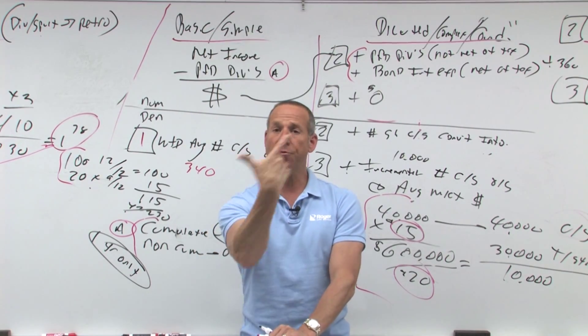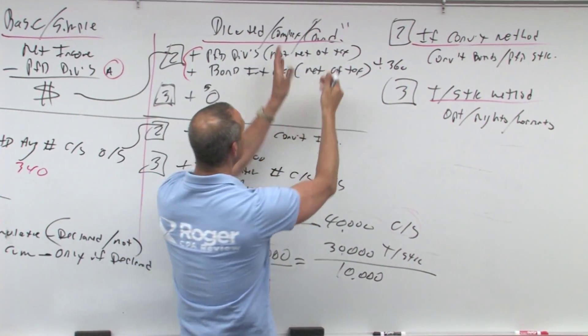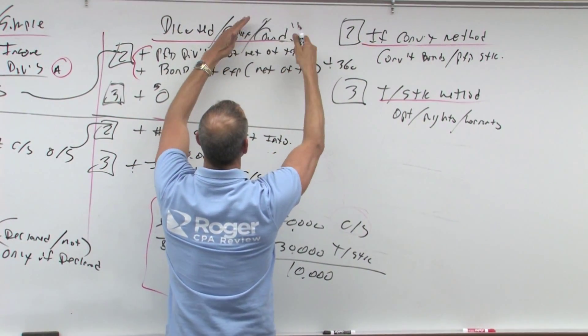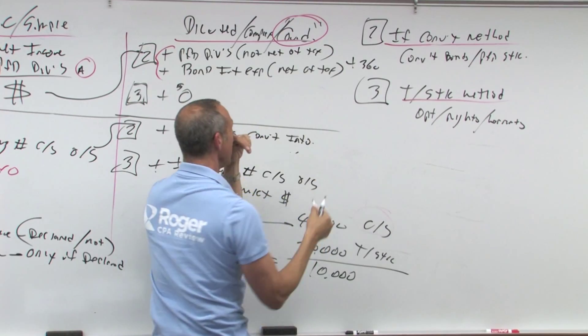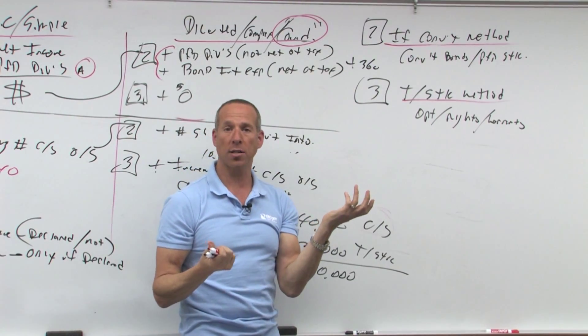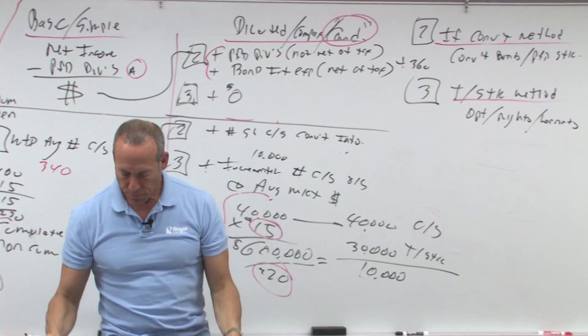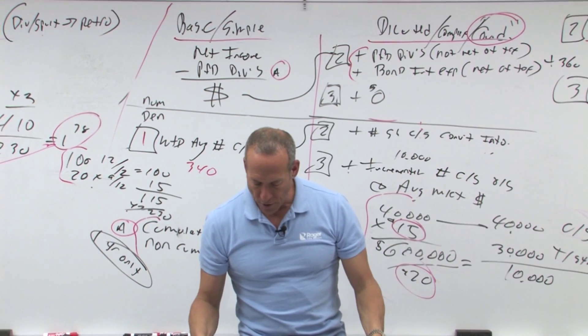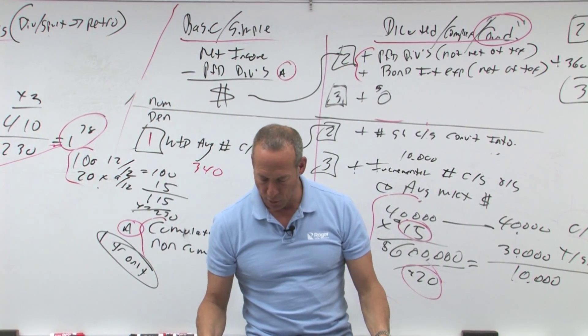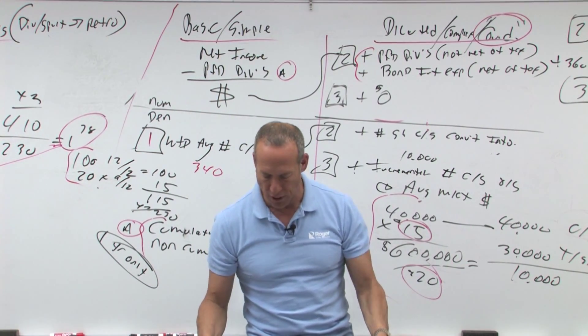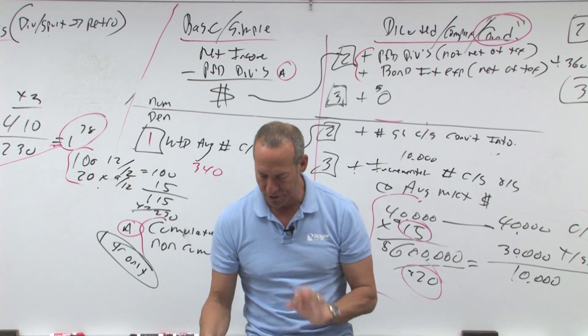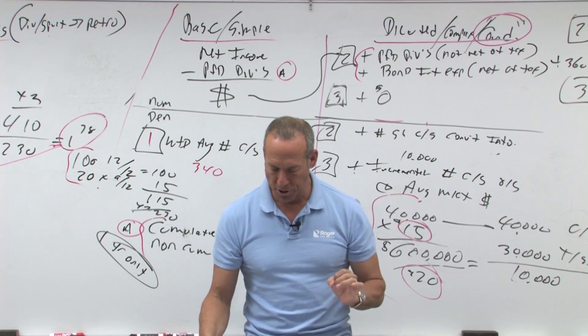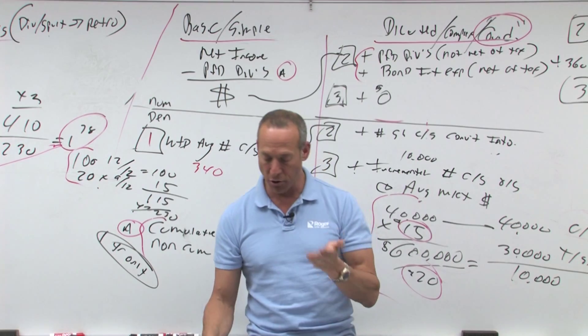Not really, because for diluted, what have we learned? Diluted says anyone who could convert does so. Even if they don't, they could at the earliest point possible. However, possible conversion of convertible bonds not considered common stock equivalents would have reduced earnings per share by 70 cents. The effect of possible exercise of common stock options would have increased earnings per share.